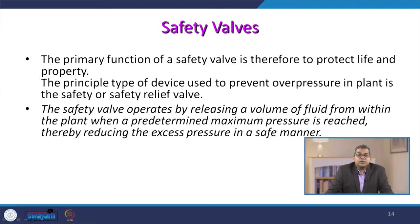Now let us talk about safety valves in detail. The primary function of a safety valve is to protect life and property — similar to the example of a domestic pressure cooker, which is a pressure vessel equipped with two different types of safety devices. The principal type of device used to prevent overpressure in plant is the safety or safety relief valve. The safety valve operates by releasing a volume of fluid from within the plant when a predetermined maximum pressure is reached, thereby reducing the excess pressure in a safe manner. Recall that a boiler has three different pressure ratings: working pressure, bursting pressure, and hydraulic pressure.